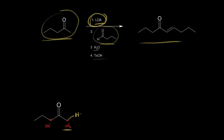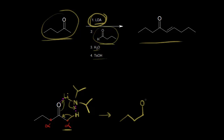We can draw in an alpha proton on the right alpha carbon — that's the one LDA is going to take. Drawing in LDA: nitrogen with its isopropyl groups, bonded to lithium. The deprotonation occurs via a cyclic mechanism: the oxygen forms a bond with lithium, and the nitrogen forms a bond with the proton. The electrons on the nitrogen anion take the proton, forming a carbon-carbon double bond, and the electrons kick off onto oxygen to bond with lithium. The product has oxygen bonded to lithium, a carbon-carbon double bond, and nitrogen bonded to hydrogen as an amine.